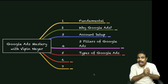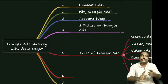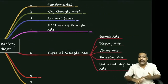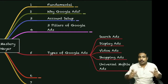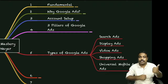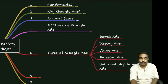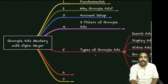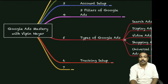Then we'll cover the different types of Google Ads — search ads, display ads, video ads, shopping ads, and universal mobile app ads. Our core focus will be on the top three: search, display, and video.